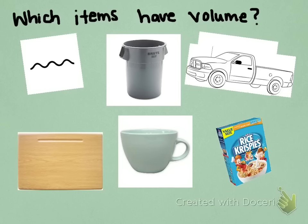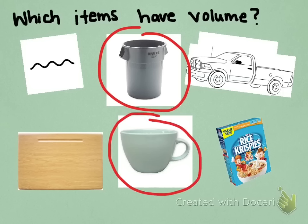I'm going to give you a second to think of which ones have volume. Remember, it needs to be a 3D object in order to have volume. The trash can, the coffee mug, and the cereal box are the three that have volume. A wiggly line, a drawing of a truck, and the top of a desk are all flat 2D surfaces.